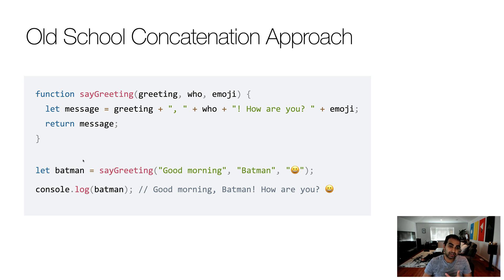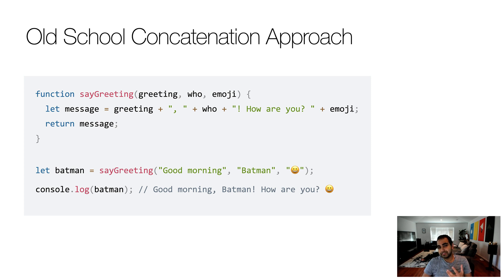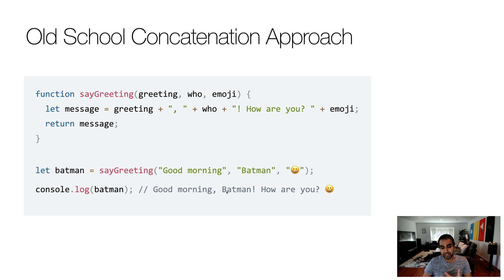If we look at an example where I'm creating a new variable called Batman and calling sayGreeting with the arguments 'good morning', 'Batman', and a smiley face emoji, and we print the output to the console, you'll see 'Good morning, Batman, how are you' printed to the screen. The part to notice is that we built a simple string using a combination of plus characters and quotation marks, and we have to think about spacing. This can get quite unwieldy for more complex expressions. Almost always when I'm doing this, I either forget a formatting character or forget a plus character, because I'm thinking about the output, not the syntax.